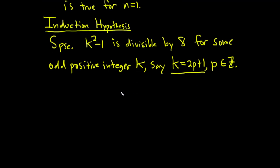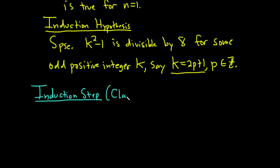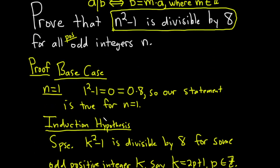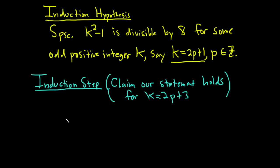In the induction step, we have to show that our statement is true for the next odd integer. The next odd integer after k equals 2p plus 1 is going to be k equals 2p plus 3. We now have to plug this into our original statement and show it's a multiple of 8. Recall the original statement was n squared minus 1, so we need to show that 2p plus 3 squared minus 1 is a multiple of 8.